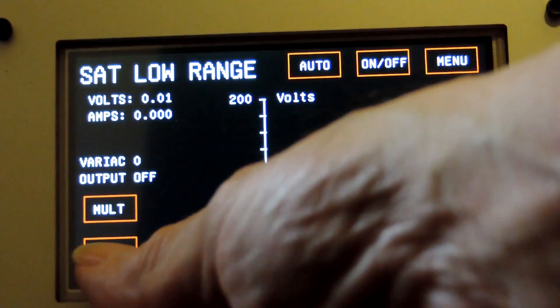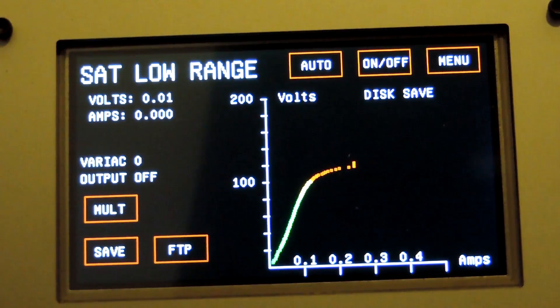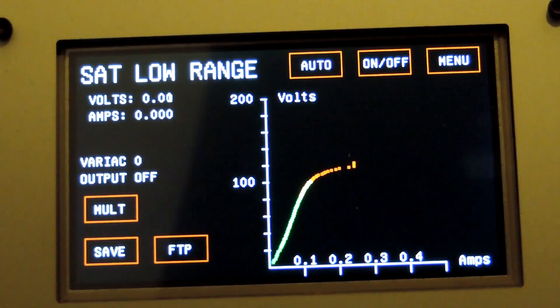So I can press the save button. See, it says disk save. The light on the flash drive is flashing. One way to tell if the flash drive is working properly is the green light should flash. If it's not, there's something wrong.